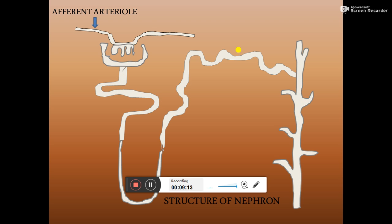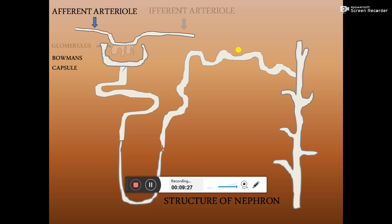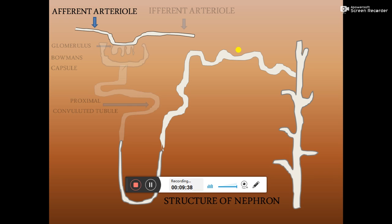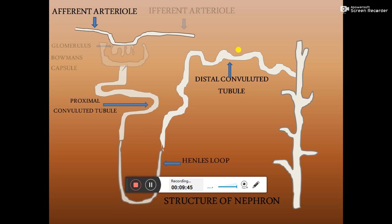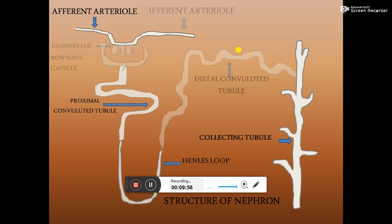The impure arterial blood comes into the kidney by the renal artery. In this generalized structure of the nephron, the afferent arteriole brings blood in and the efferent arteriole takes out the filtered blood. The glomerulus is the cluster of blood vessels. The cap-shaped Bowman's capsule surrounds it, followed by the proximal convoluted tubule, the loop of Henle, and the distal convoluted tubule, which is nearest to the collecting tubule.